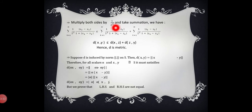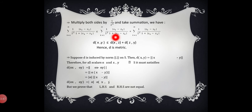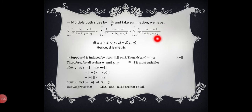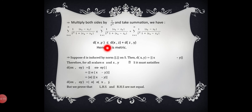Multiplying both sides by 1/2^k and taking the summation, we get Σ [1/2^k · |x_k − y_k| / (1 + |x_k − y_k|)] ≤ Σ [1/2^k · |x_k − z_k| / (1 + |x_k − z_k|)] + Σ [1/2^k · |z_k − y_k| / (1 + |z_k − y_k|)]. This is exactly d(x, y) ≤ d(x, z) + d(z, y). Hence d is a metric on s.